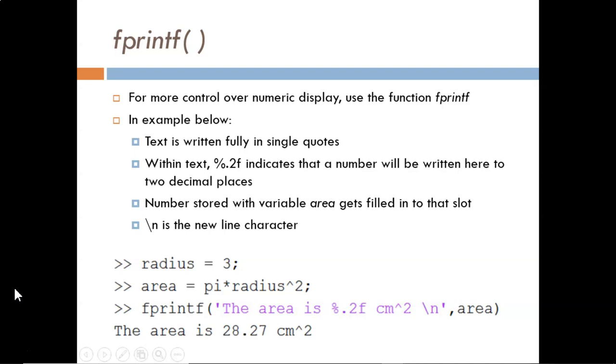Let's look at this example. First, we perform our computations to obtain the area of a circle. Then, we call in the fprintf function. We put the text we want displayed in single quotes. These symbols, %.2f, allocates a field within the text where a number will be written. The number stored in this variable after the quotes is what gets copied in to that field. This number is displayed to two decimal places because of the .2 within %.2f.